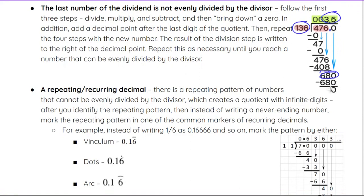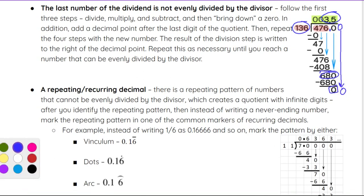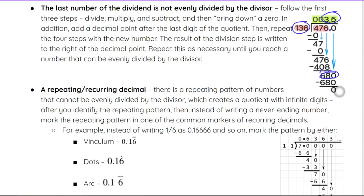If there wasn't a zero at the bottom, we would continue to add another zero, bring it down, and continue dividing again.